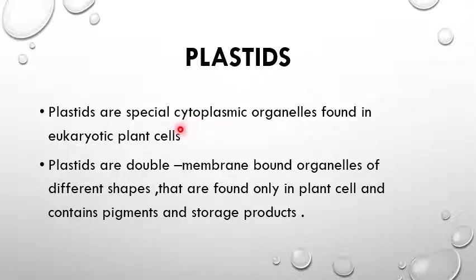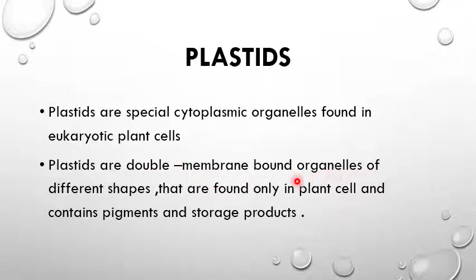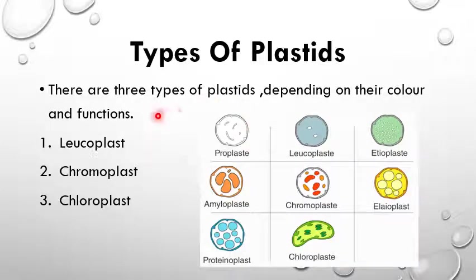Plastids are special cytoplasmic organelles found in eukaryotic plant cells only and are absent in animal cells. They are double membrane-bound organelles of different shapes, found only in plant cells, containing pigments and storage products. There are three types of plastids depending on their color and function.